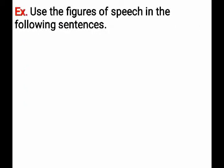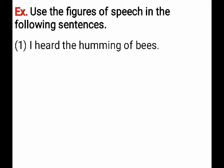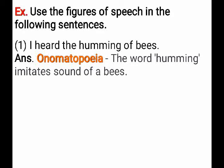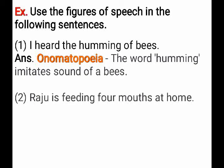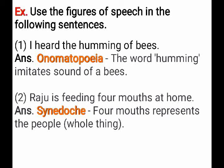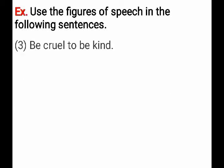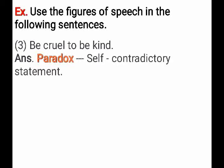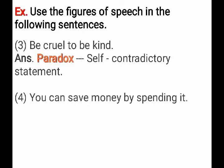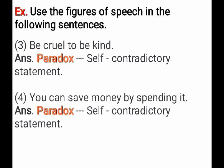Let's begin an exercise. Use the figures of speech in the following sentences. I heard the humming of bees — the figure of speech used is onomatopoeia, as the word humming imitates the sound of bees. Raju is feeding four mouths at home — the word mouth refers to people, so the figure of speech used is synecdoche, as four mouths represents people. Be cruel to be kind — the figure of speech used is paradox, a self-contradictory statement. You can save money by spending it — the figure of speech used is paradox, a self-contradictory statement.